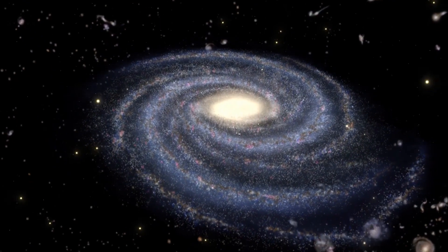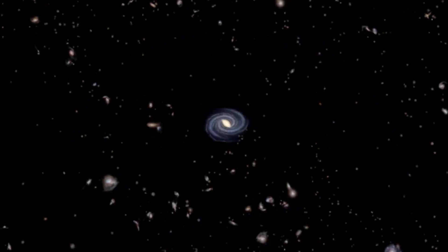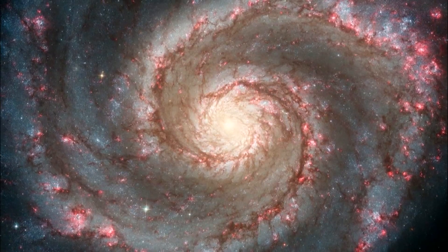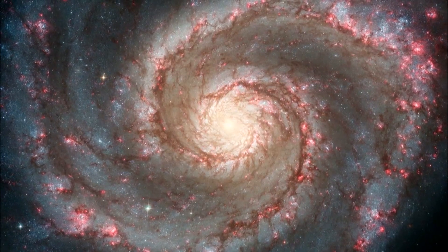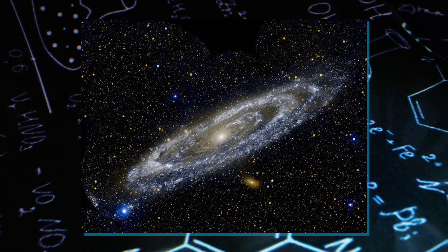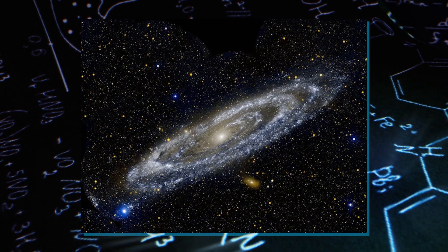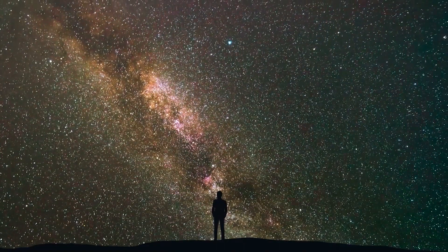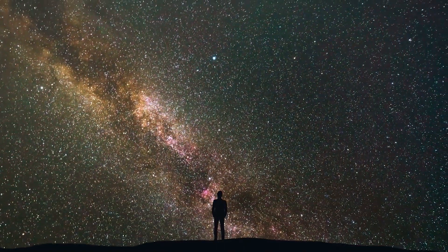Before, we thought Andromeda was much bigger than our Milky Way. But now we know they're not so different in size. Andromeda is wider than the Milky Way, like a big circle in space. So, the Andromeda galaxy has taught us a lot about space, how galaxies form, and our place in the universe. It's amazing what we can learn by looking up at the night sky.